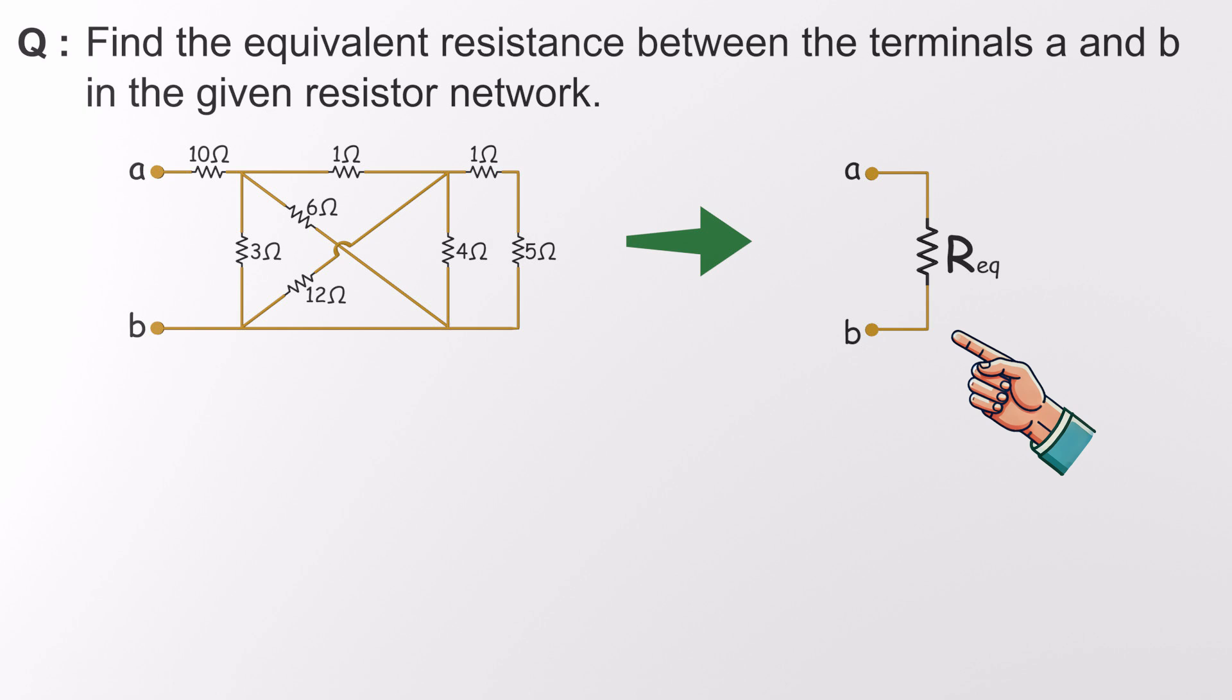And here's the key. That final resistor must behave exactly like the original network in terms of how it responds to current and voltage at the terminals.